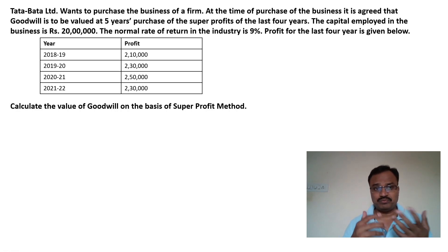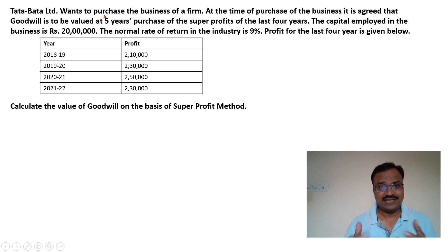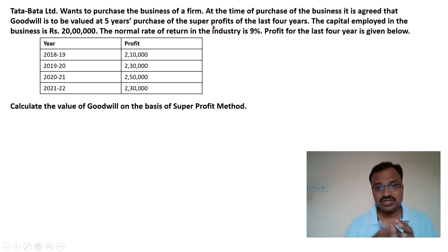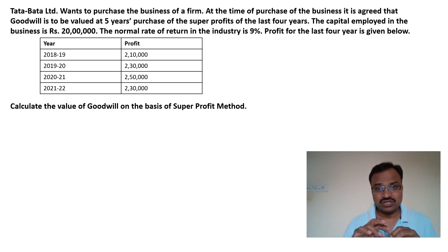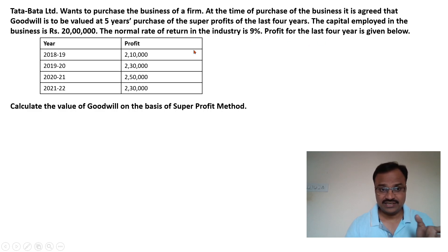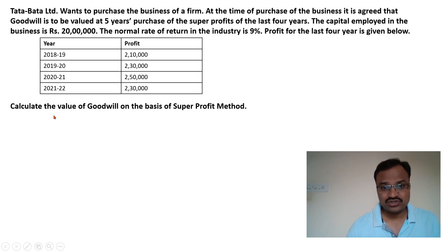In the super profit method, additional information is given. The question says Tata Bata Limited wants to purchase the business of a firm, and goodwill is to be valued at five years purchase of the super profits. The capital employed in the business is Rs. 20 lakh, the normal rate of return in the industry is 9%, and the profits for the last four years are the same as before. We need to calculate the value of goodwill on the basis of the super profit method.